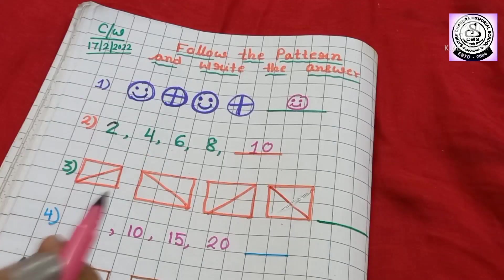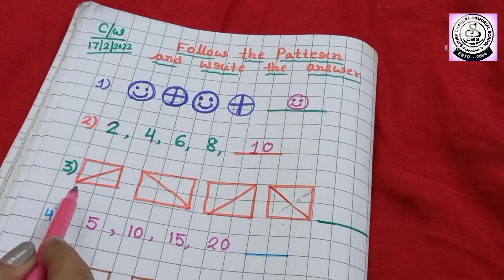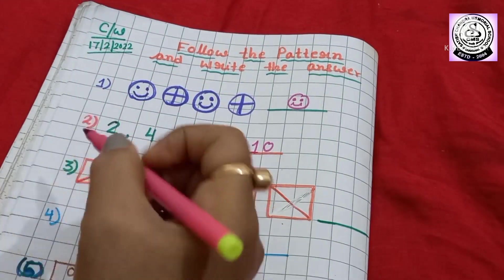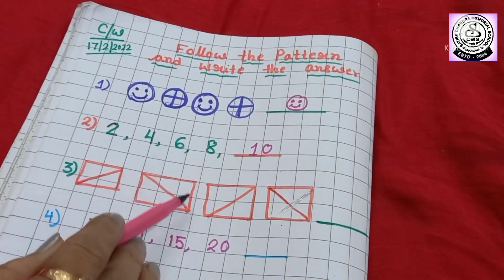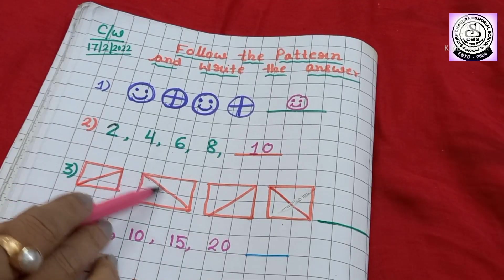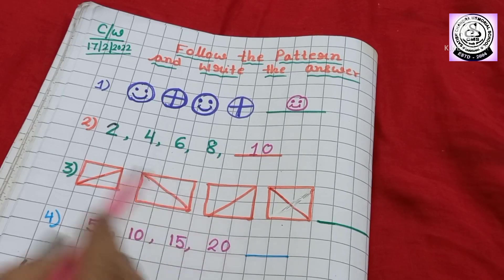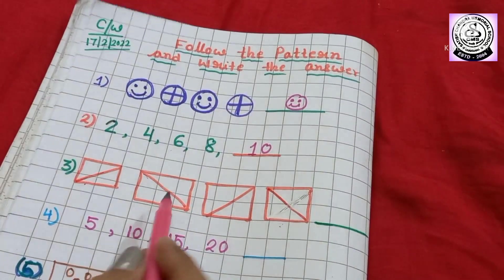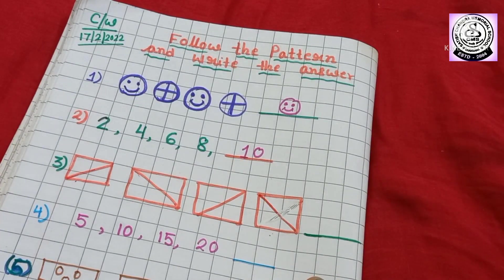Now, here you can see, I have drawn one box and inside the box, I have drawn one line like this. And here also, I have drawn one box with a line like this. So, next one, I have drawn like this and this one like this. So, which one will come next? You have to follow the pattern.